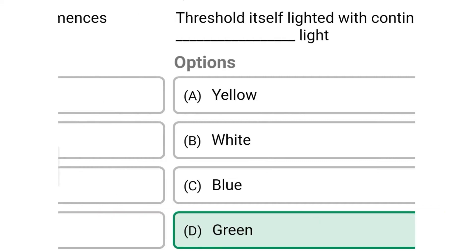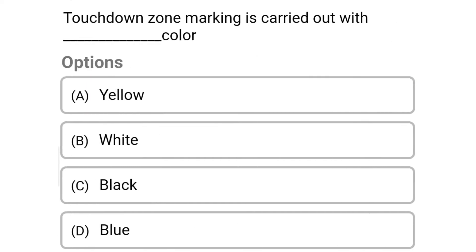Next question: runway aiming point marking commences dash meter from the threshold — option A 400, option B 800, option C 1200, option D 200. The correct answer is option A 400.